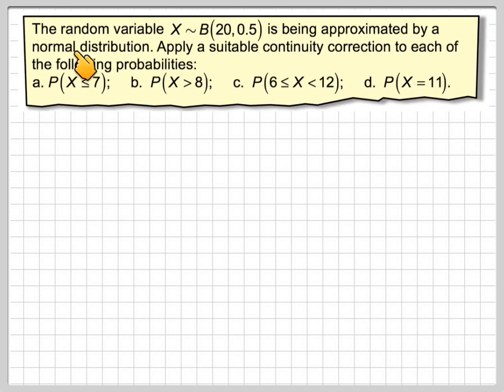We've got here the random variable X, binomial distribution with n is 20 and probability of success is 0.5, being approximated by a normal distribution. Apply a suitable continuity correction to each of the following probabilities: the probability that X is less than or equal to 7, the probability that X is greater than 8, the probability that X is greater than or equal to 6 but less than 12, and the probability that X is equal to 11.